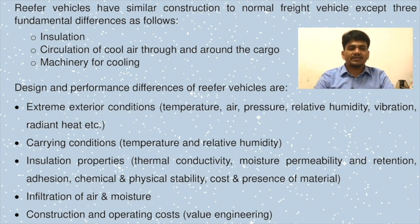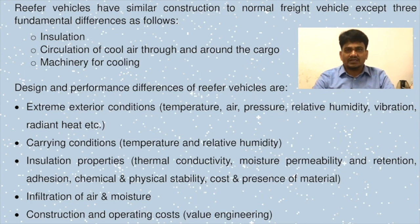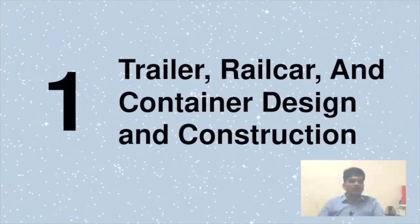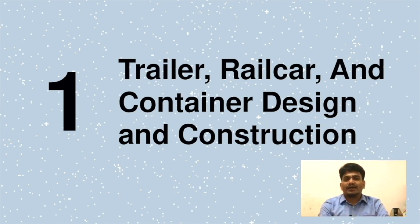Additional differences include chemical and physical stability, cost, presence of material, infiltration of air and moisture, and construction and operating costs that lead to value engineering. We have seen trailer, rail car, and container types, and now we shall talk specifically one by one about trailer, rail car, and container design and construction.